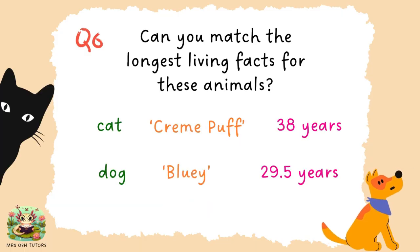Question six. The longest-living cat was called Cream Puff and lived to be 38. The longest-living dog was called Bluey and lived to be almost 30 years old.